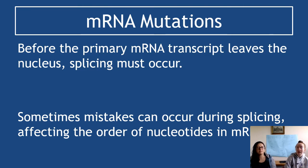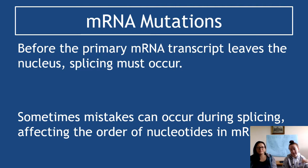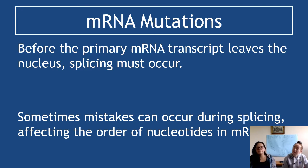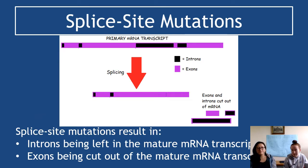Looking at mRNA mutations: before the primary mRNA transcript actually leaves the nucleus, splicing must occur. This is something we have discussed before. If you've forgotten what splicing is or what the primary mRNA transcript means, go back and review that, because sometimes mistakes happen here — the right things are not necessarily left in or taken out — and this can result in an effect on nucleotide order from the mRNA code.